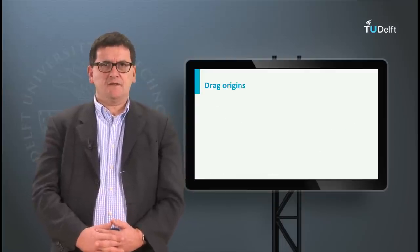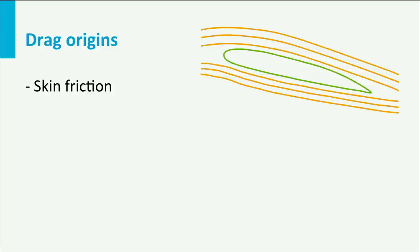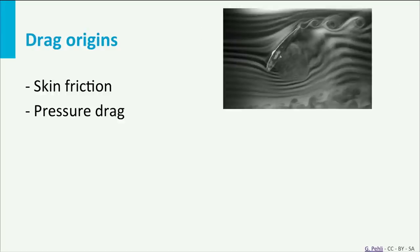In this slide you can see different types of drag. First we have the skin friction when the air glides over the wing surface. Secondly, we have the pressure drag, creating pressure differences and inducing a turbulent flow and vortices.